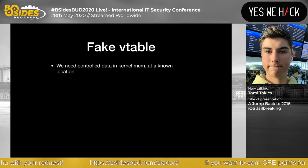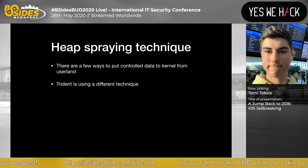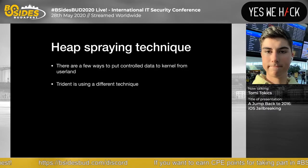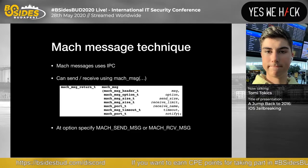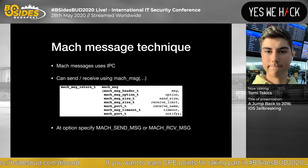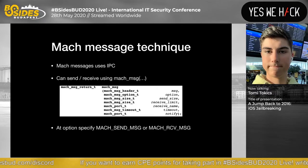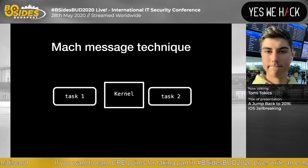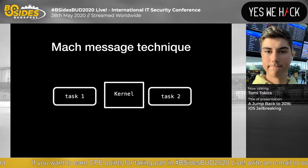There are a few ways to put controlled data into kernel memory from user land — the original technique uses a different method, but I'm focusing on Mach messages. Mach messages use IPC; we can send or receive using a mach_msg call with an option specifying send or receive. This is how sending a message works visually: task 1 sends to the kernel, which allocates space and forwards to task 2. When task 2 receives it, the kernel frees the space.